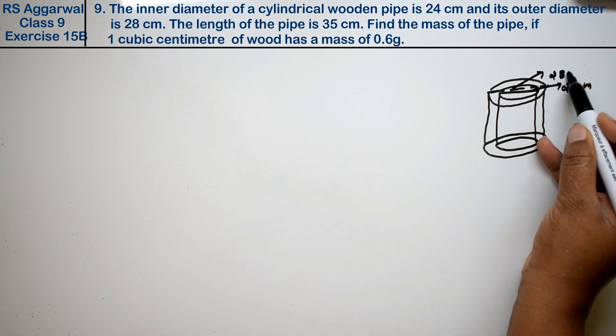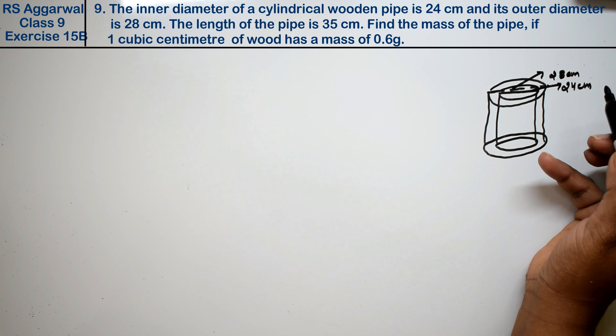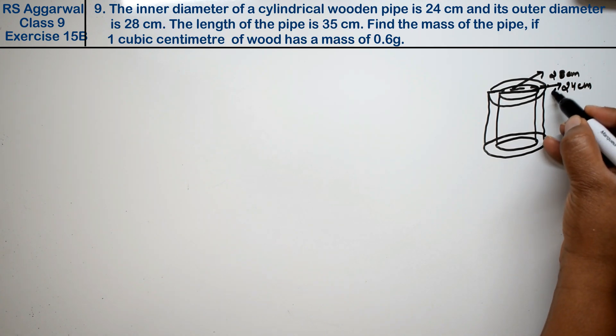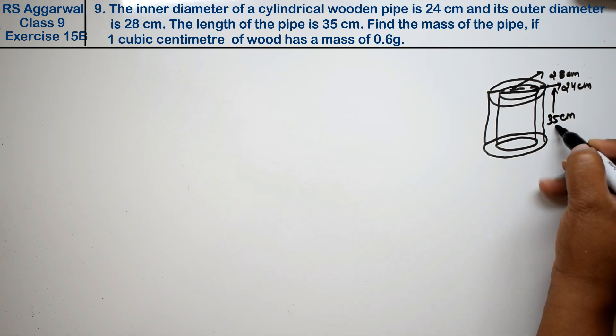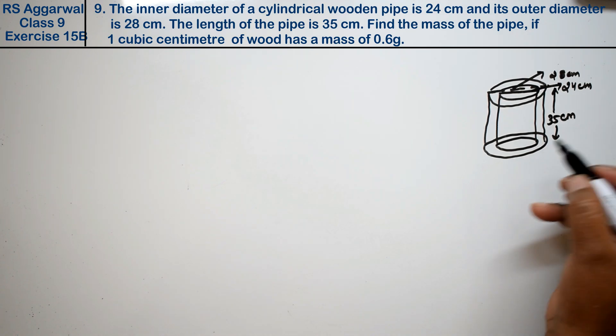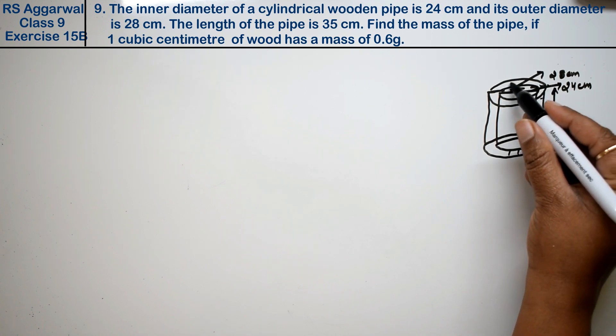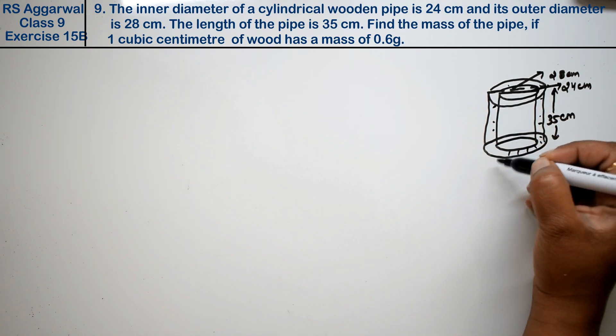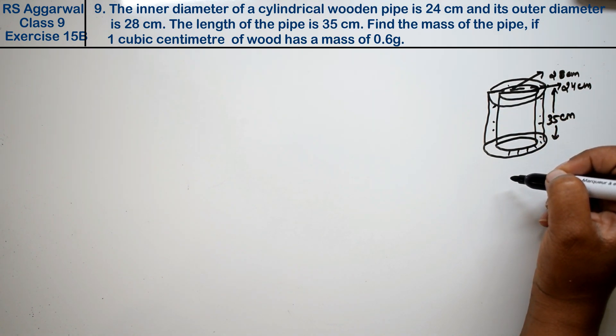It says the length of the pipe is 35 cm. For both, the length is 35 cm. Now find the mass of the pipe if 1 cubic cm of wood has a mass of 0.6 grams. We need to find how much wood was used to make the cylinder.